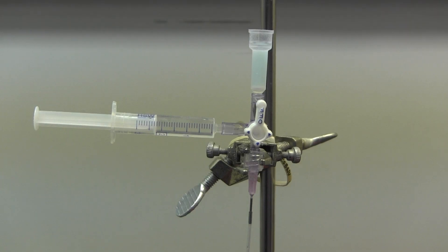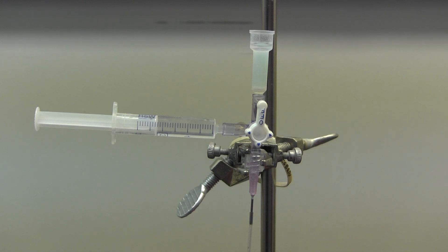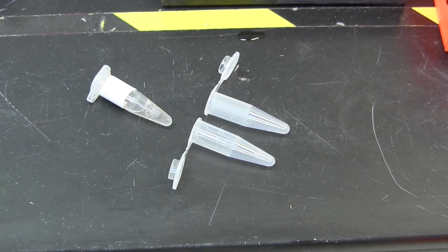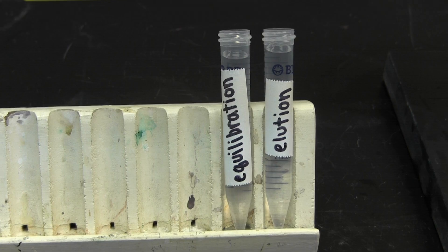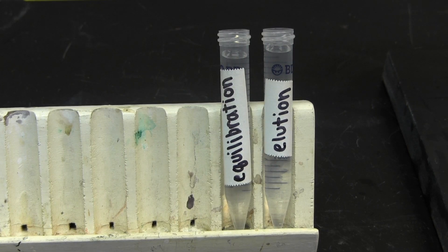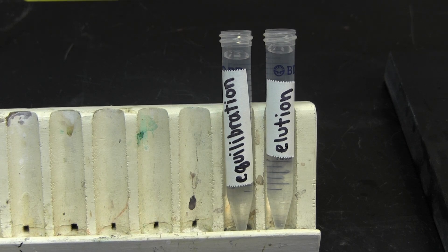Begin by obtaining a packed column that color coordinates with the color of the tape on your unknown sample. This will ensure that your target protein binds tightly to the resin so that the nonspecific contaminant protein can fall through first. Also, obtain 10 milliliters of the appropriate color-coded equilibration buffer and 5 milliliters of the correct elution buffer.